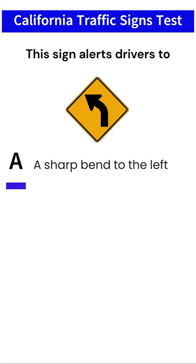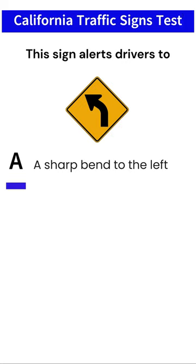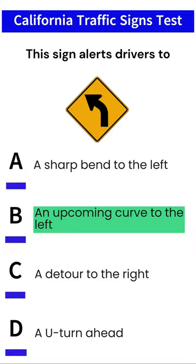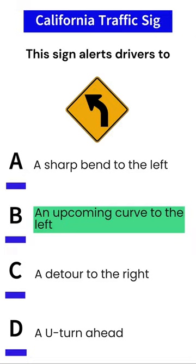This sign alerts drivers to: A: a sharp bend to the left. B: an upcoming curve to the left. C: a detour to the right. D: a U-turn ahead. Answer: B, an upcoming curve to the left.